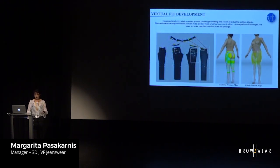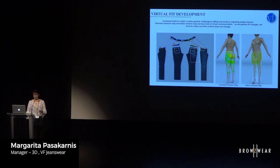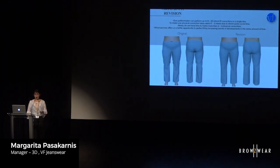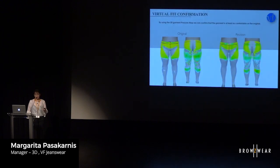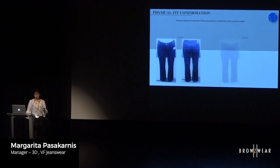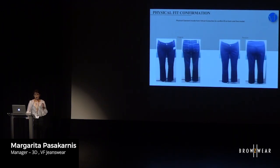We use Browseware for fit development, and denim is the most inconsistent product — but at least virtually it is absolutely consistent. One pattern maker can create up to 10 to 20 fit corrections in one day, whereas it takes three weeks to get one sample out of Asia. And of course there is a pressure map to make sure the fit didn't change. The consumer won't know it — they know it's better, they just don't know why. And we always confirm on the physical model in the end to make sure it is comfortable.